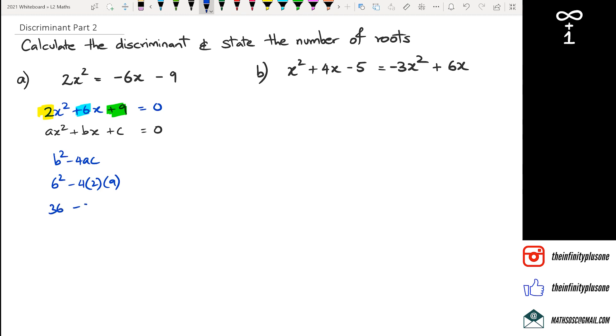And what I've got here is -36. Because the discriminant is a negative number, because it's less than 0, we can say that there are no real roots or solutions in this case.